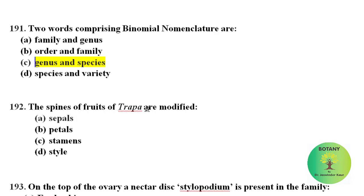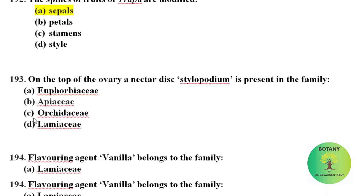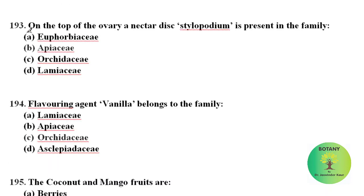Spines are a modification of stipules. On the top of the ovary, a nectary stylopodium is present — this is the characteristic feature of family Apiaceae.